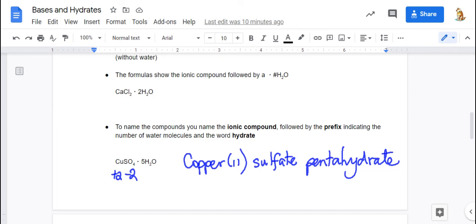So hydrate's pretty straightforward. You have an ionic compound and then a dot and then the number of water molecules. So the name will say the name of the ionic compound, and then there'll be a prefix to indicate the number of waters. And this first example up here was calcium chloride dihydrate. Di for two, hydrate for water.